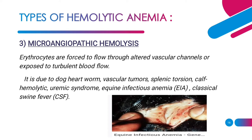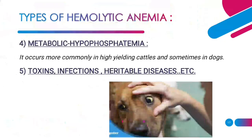In the picture of equine infectious anemia, there are petechial hemorrhages. Hemolytic anemia due to metabolic hypophosphatemia occurs most commonly in high-yielding cattle and sometimes in dogs. Toxins, infections, and heritable diseases may also cause hemolytic anemia. For example, in bovines and swine, congenital porphyria is a heritable disease that causes hemolytic anemia. Bacillary hemoglobinuria, leptospirosis, hemolytic streptococcal and staphylococcal infections also cause hemolytic anemia.